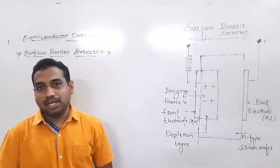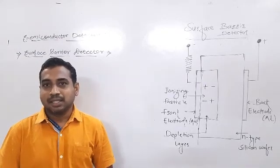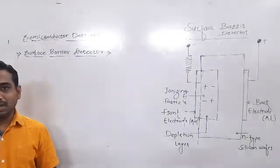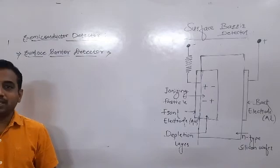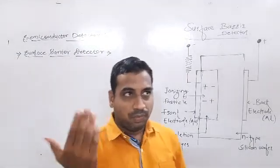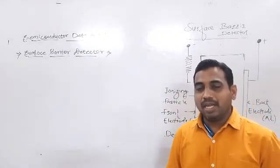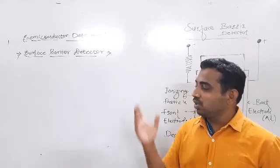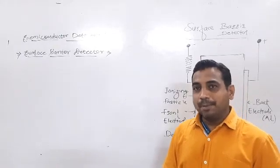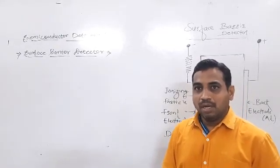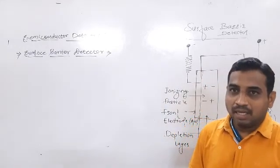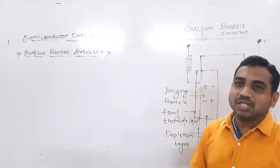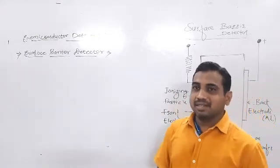In semiconductor detectors, we use a semiconductor — that is the PN junction — to detect nuclear radiation. The radiation stems from highly energetic or low energetic particles which is imposed on these PN junctions, and with the help of these PN junctions we count as well as detect such kinds of radiations. In the previous lectures we discussed about the semiconductor detector types.